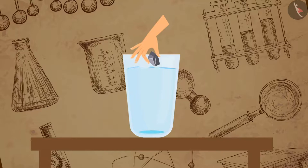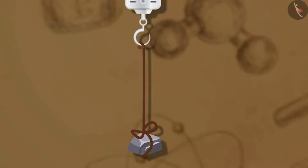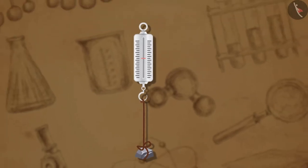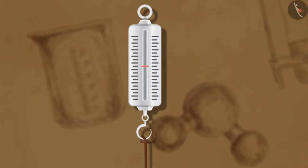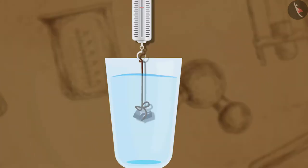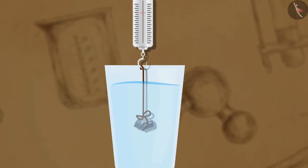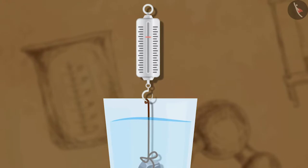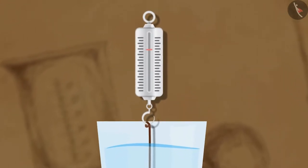Now let us perform a simple activity to see what happens to the weight of a substance when immersed in the fluid. Take a piece of stone and tie it at the end of a spring balance with the help of a string, and note the reading in the spring balance. Then immerse the stone in a glass of water and again take the reading in the spring balance.